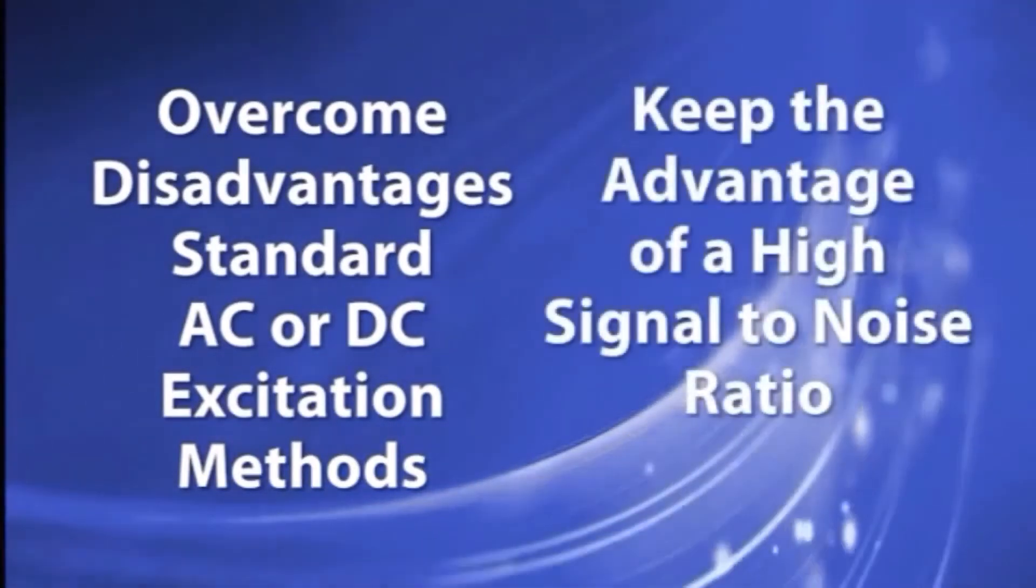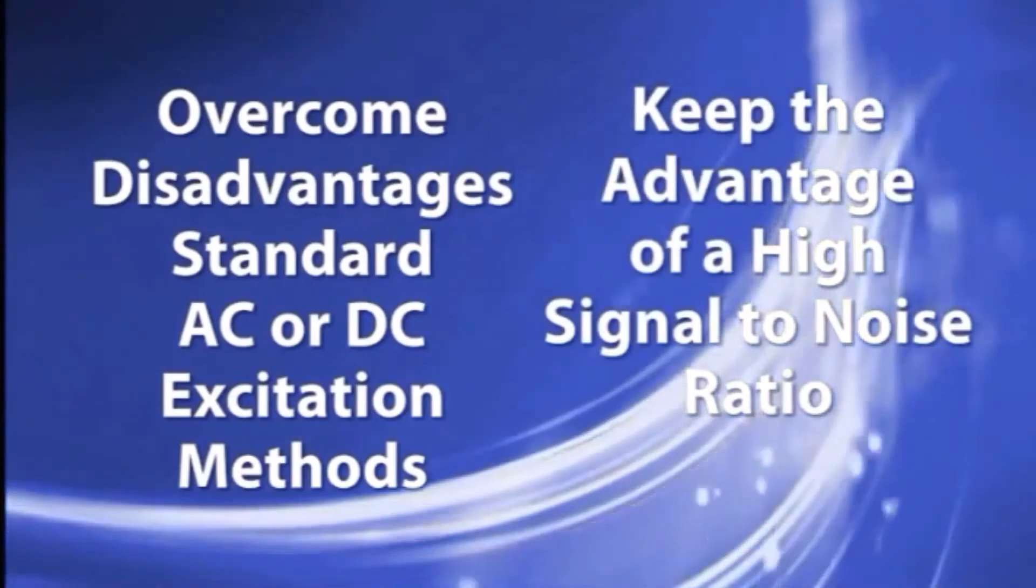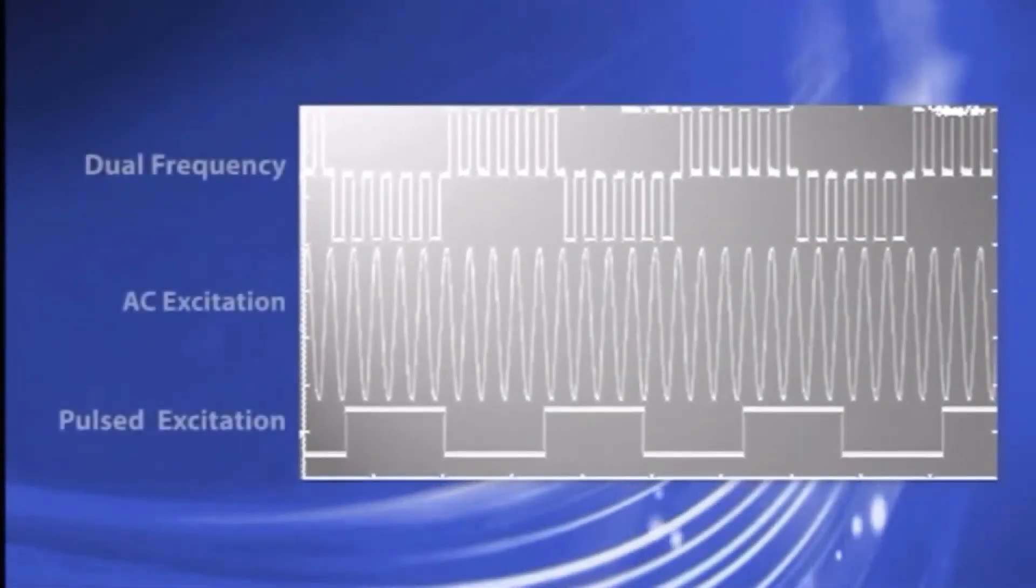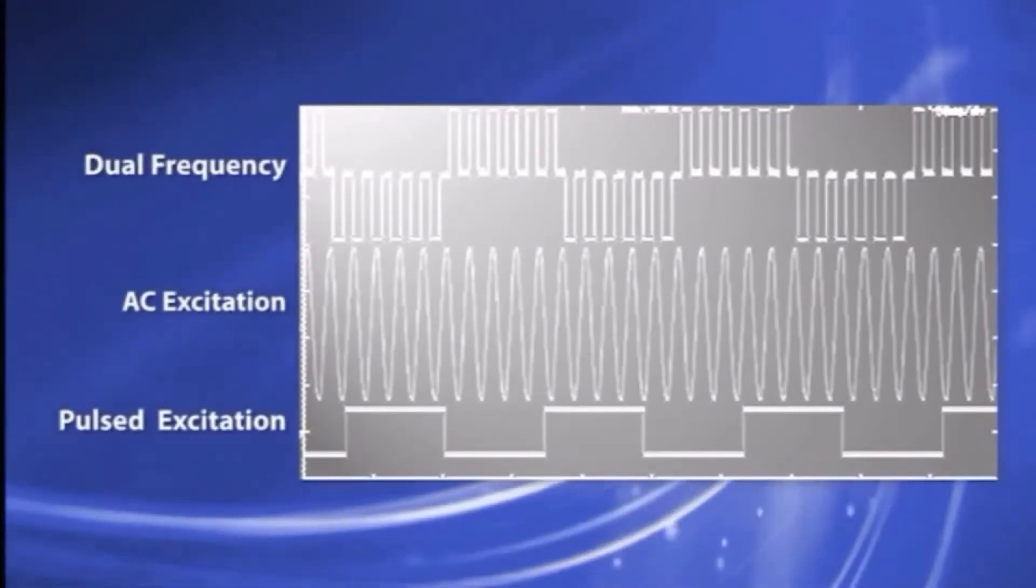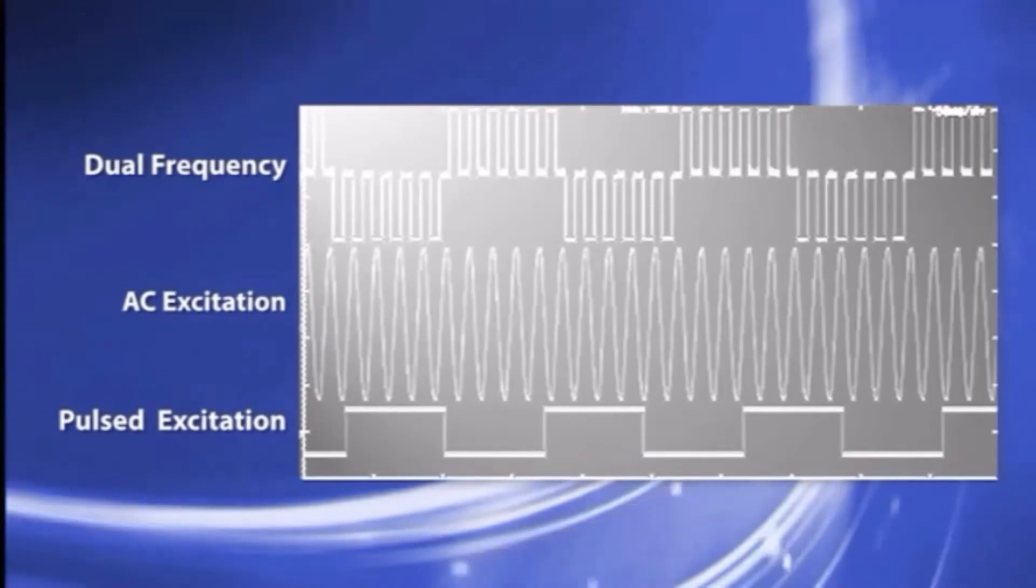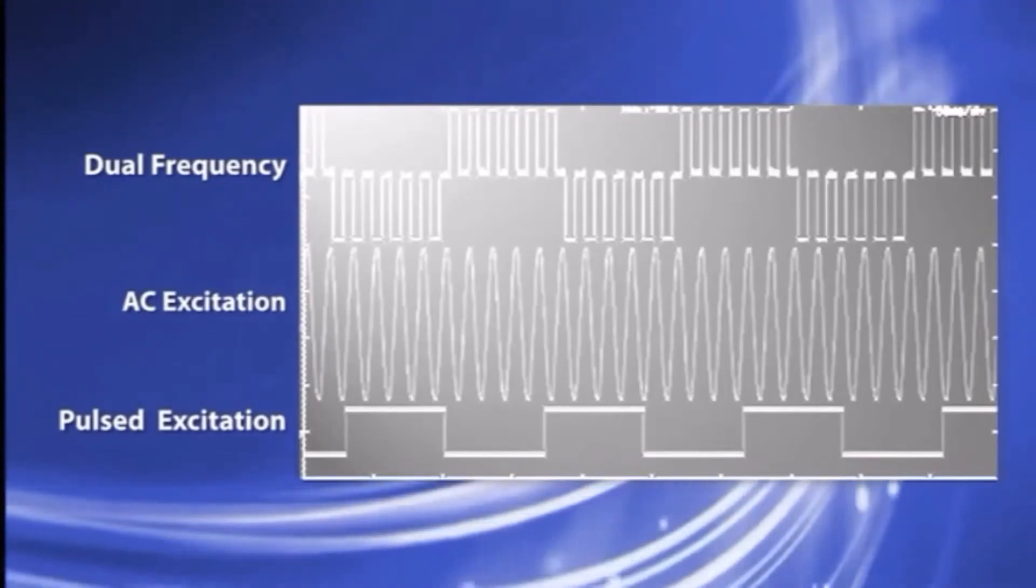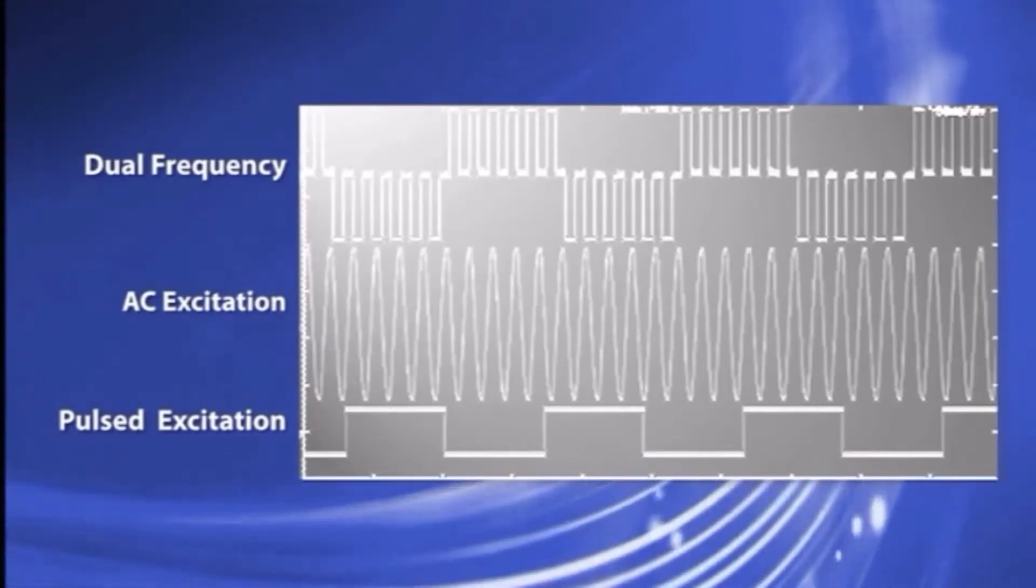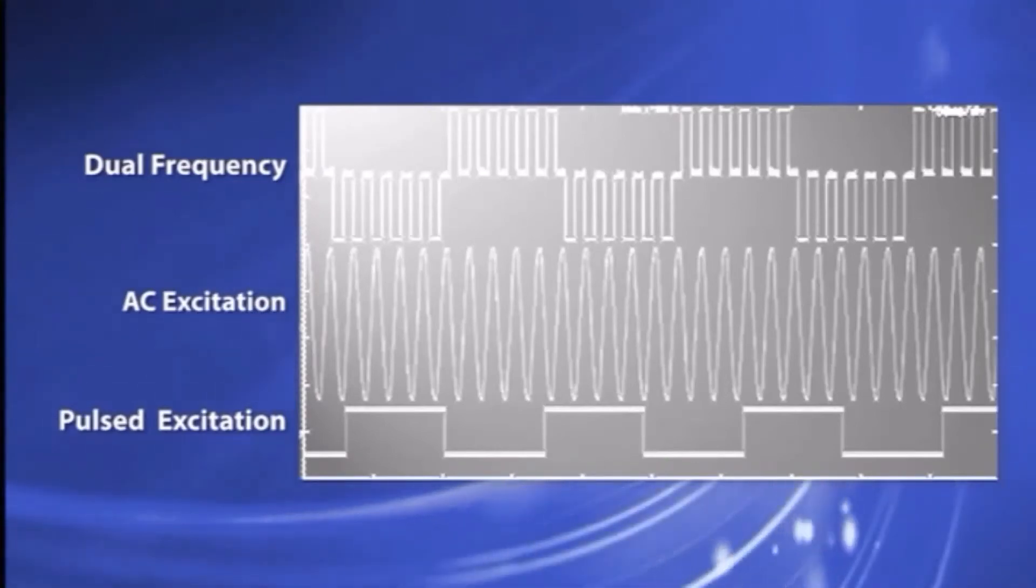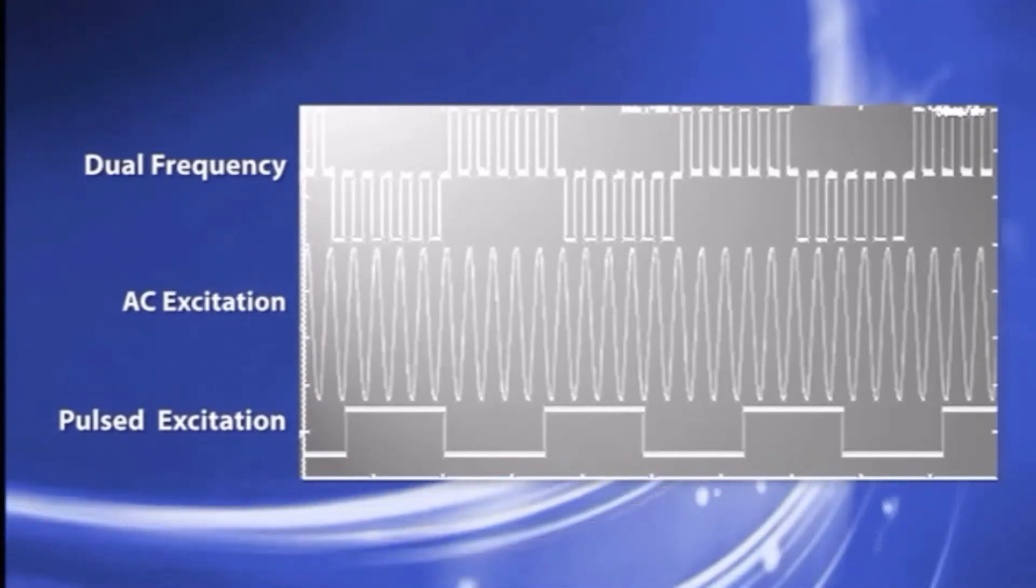To overcome the disadvantages of the standard AC and DC excitation methods and keep the advantage of a high signal-to-noise ratio, Yokogawa's patented dual frequency excitation is the ideal combination. Dual frequency excitation combines the positive benefits of both AC and DC excitation using both a high 75 hertz frequency and a low frequency excitation of approximately 6 hertz to drive the coils.